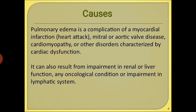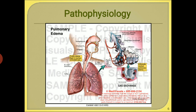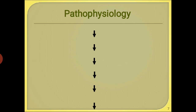It can also result from impairment in renal or liver function, any oncological condition, or impairment of the lymphatic system. In the pathophysiology, fluid backs up into the veins of the lungs, and the increased pressure exerted inside the veins forces the fluid out into the air spaces or alveoli, affecting the exchange of oxygen and carbon dioxide.